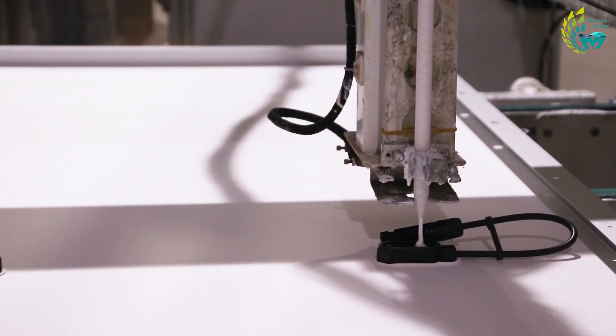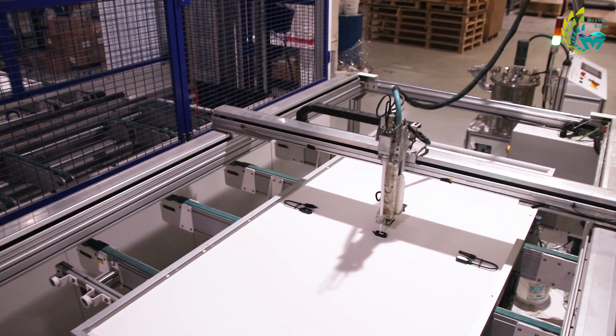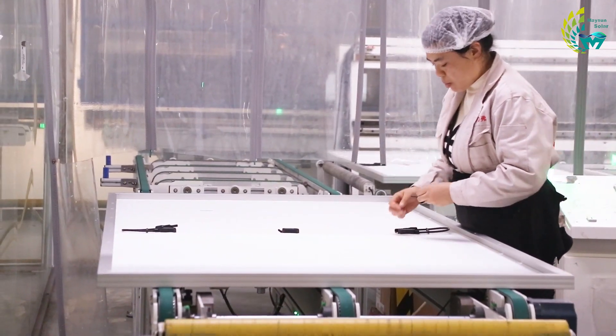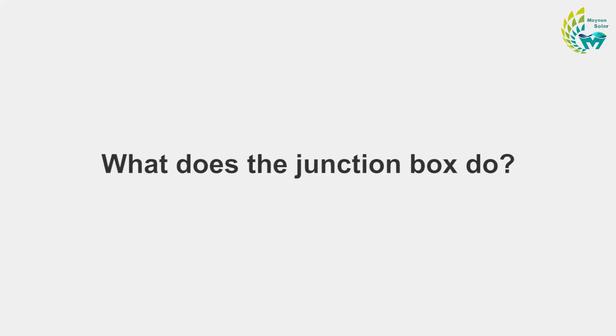After passing the test, the assembly is transported under the glue up machine and starts to inject glue to the front of the junction box. And finally the junction box is sealed by hand. What does the junction box do?